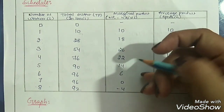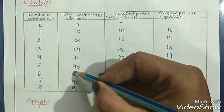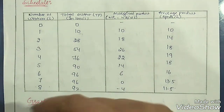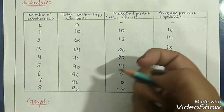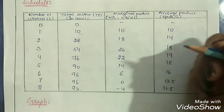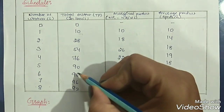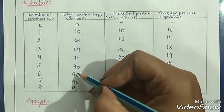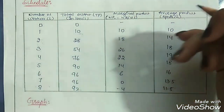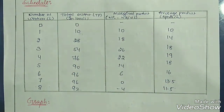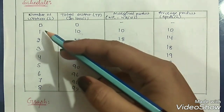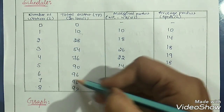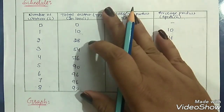But at one certain point, when production reaches its maximum capacity of 96 cars in a day, total product will stop increasing and start to decrease. Even if we go on increasing labor after that point, we cannot increase total product.